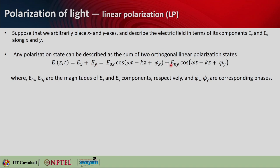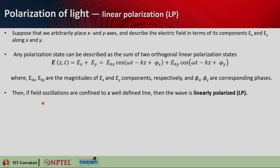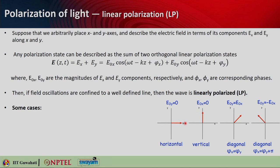Similarly, E_y = E_oy * cos(ωt − kz + φ_y). Here E_ox and E_oy are the maximum amplitudes of E_x and E_y, and φ_x and φ_y are the corresponding phases. When the field oscillations are confined to a particular line, we call that wave a linearly polarized wave. When the field is only along x — meaning the E_y component is zero — we call it horizontal polarization or x-polarization, which is 0-degree linear polarization.